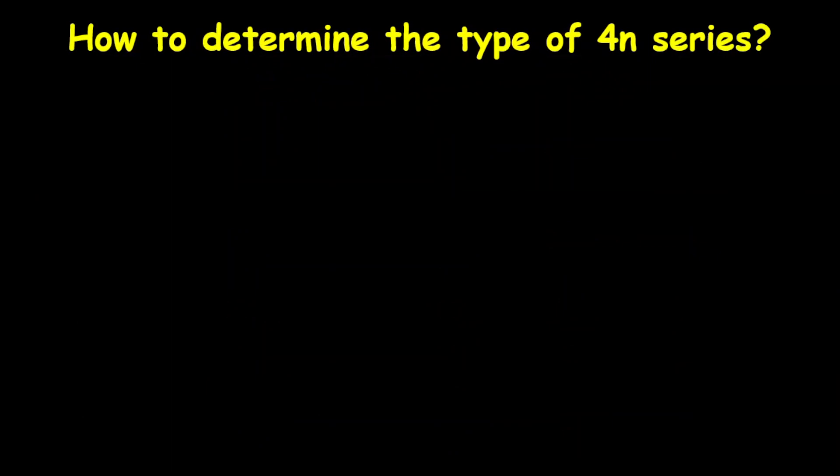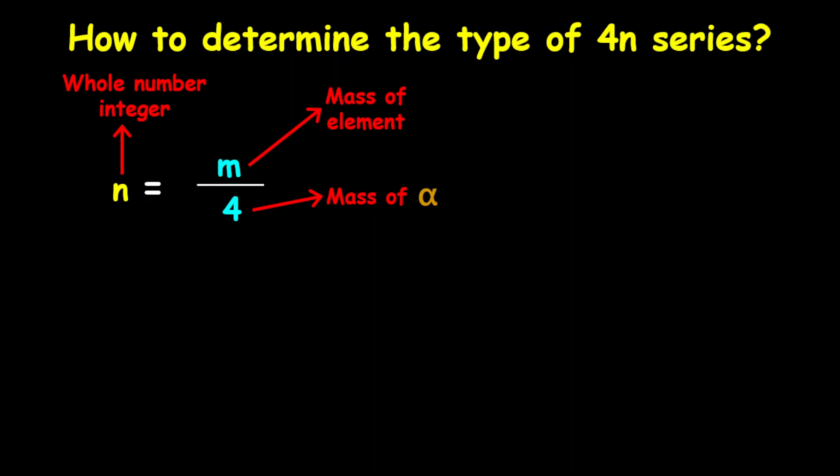Now a quick reminder how to determine the type of 4n series is by using the equation n equals m divided by 4. n is a whole number integer, m is the mass of the element, and 4 is the mass of the alpha particle.